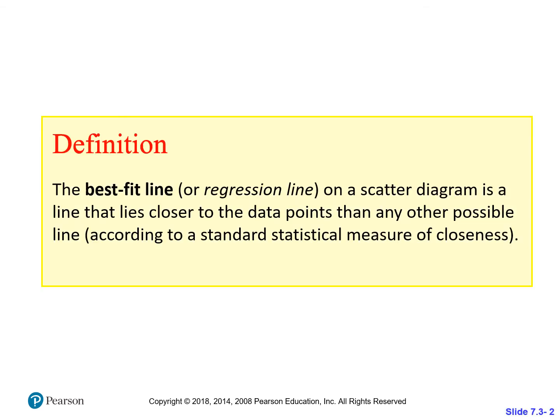The best fit line, or the regression line, is a line that ties to the data as close as possible than any other possible line. It lies closer to the data points than any other line you could draw. This is a mathematical thing. We're not gonna get into how to create a line of best fit. Just know that a statistician has a formula they use to get that best fit and closeness to the other points.